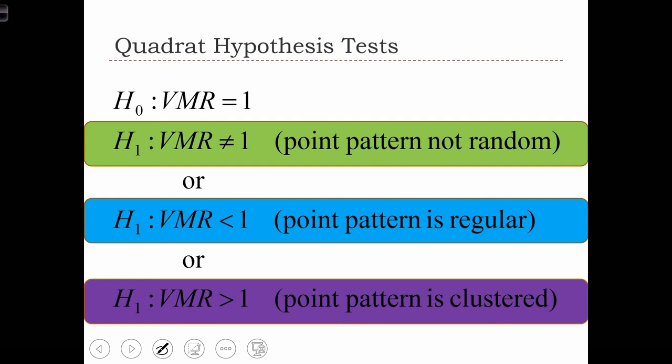In quadrat hypothesis testing, the null hypothesis is going to be that VMR equals 1. And remember, when VMR equals 1, this is asserting that the point pattern is random.